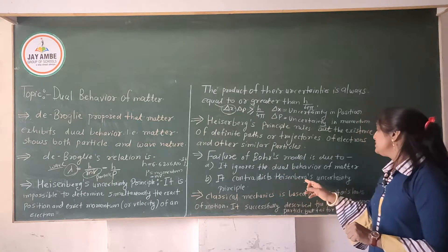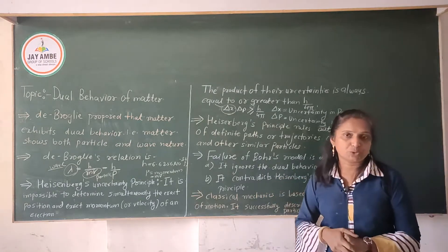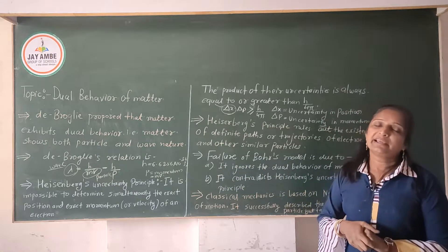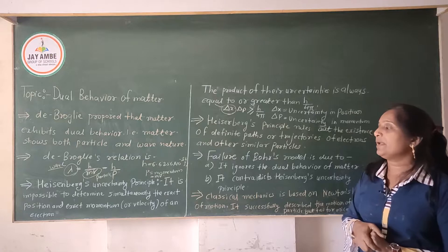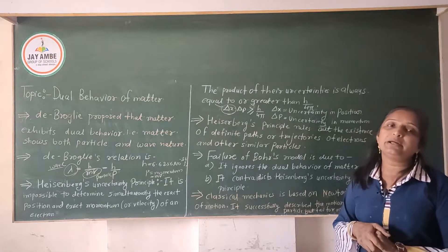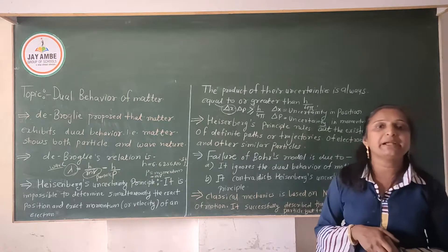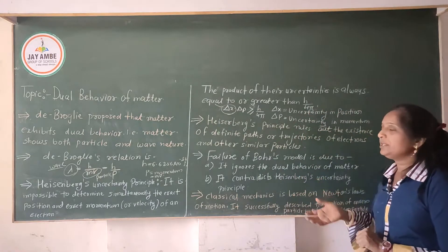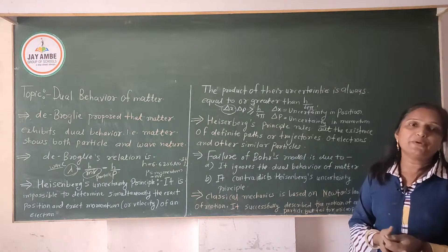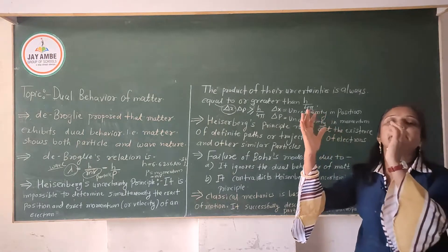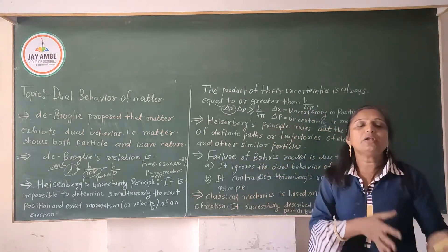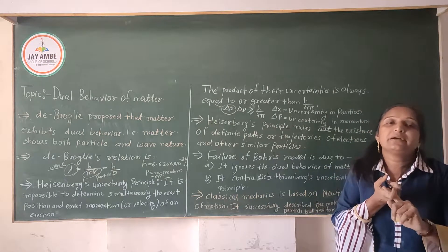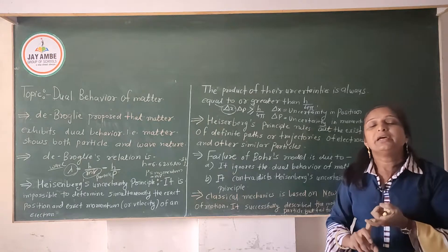Second, Bohr's model contradicts Heisenberg's uncertainty principle. Heisenberg's uncertainty principle means that the exact position and momentum of an electron cannot be simultaneously determined. But in Bohr's model, these two things are assumed to be determined exactly — which is completely opposite to the uncertainty principle.